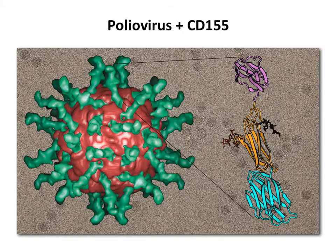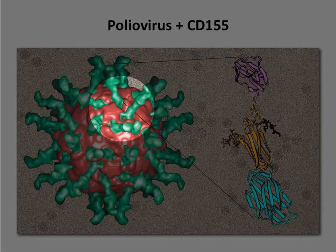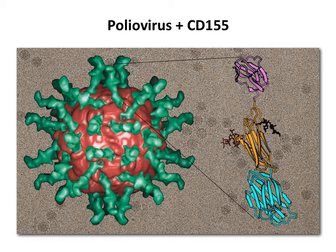Here is an example of an image from cryo-EM reconstruction — this is poliovirus bound to its cellular receptor, called CD155. In red is the virion, and the green molecules are the receptor molecules bound to it. You can get an overall view of the structure and see individual receptor molecules and where they bind in the virus capsid. This resolution was about 10 angstroms — so you can't see individual polypeptide chains, but you can get an idea of how things fit into each other. This can be quite powerful.